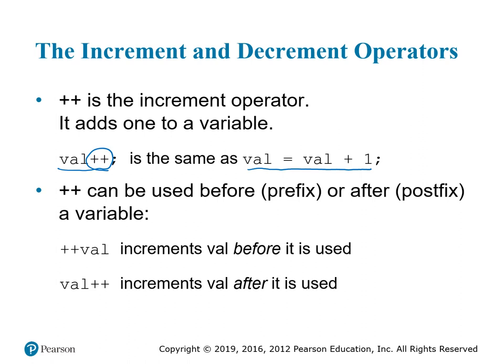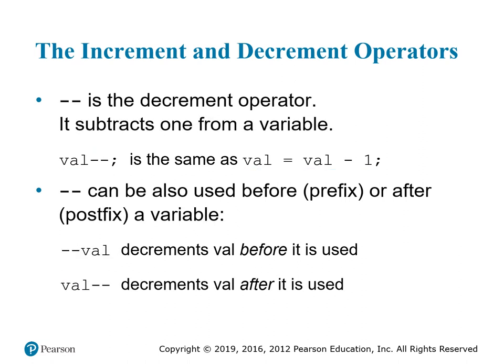Plus-plus can be used either before or after the variable, and it's an important distinction. If you put plus-plus before the variable, it increments the value before it gets used on that line. If you put plus-plus after, it increments the value after it is used on that line. Minus-minus is the decrement operator — it has exactly the same effect but in reverse. Instead of writing val equals val minus one, you can put val-- and it will subtract one from the value in memory.